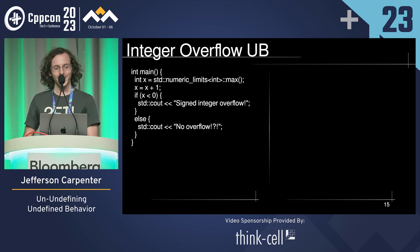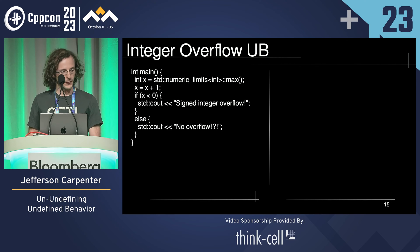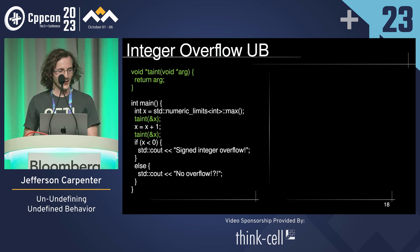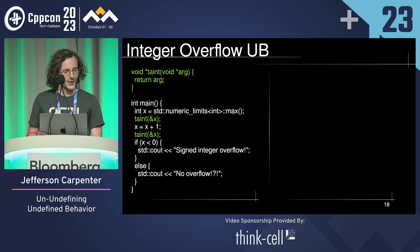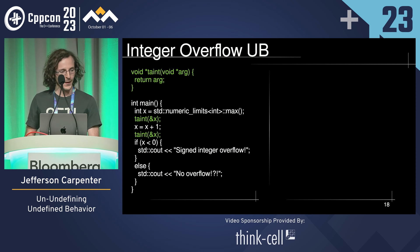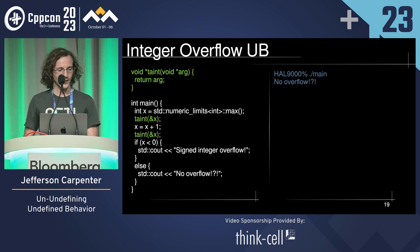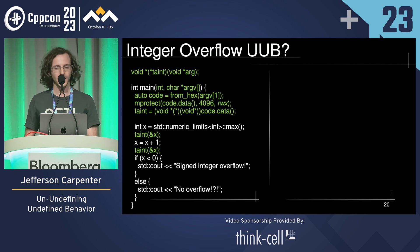Now let's look at integer overflow. Here the compiler outputs "no overflow". What we're going to do is pass the address of our integer, which is INT_MAX, into a function. This function doesn't do anything — it just returns its argument. The compiler understands this and still optimizes the program according to its understanding of UB.